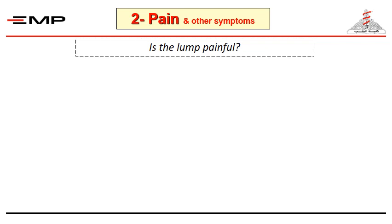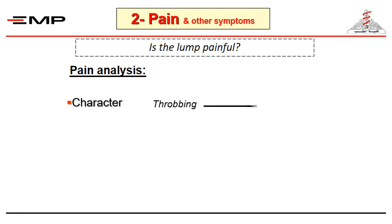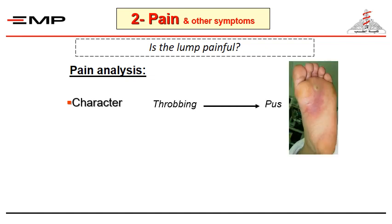Then you should ask the patient if the swelling is painful or not. If painful, you should analyse the symptom of pain — in particular, the character of pain; throbbing pain usually means pus under tension, and the relation of pain to the appearance of swelling. In inflammatory swellings, pain appears first, then the swelling is noticed. On the other hand, malignant swellings are painless at first and produce pain when they infiltrate the surrounding tissues.